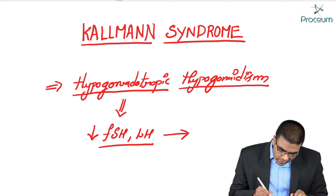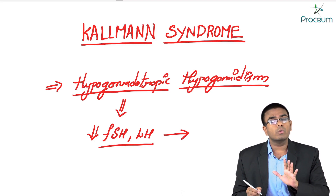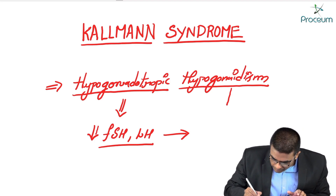Whenever there is decreased production of follicle stimulating hormone, the ovaries are not being stimulated. The follicles are not going to develop, mature, or ovulate. So the gonads are not doing their function — there is hypo-functioning of the gonads, which we call hypogonadism.